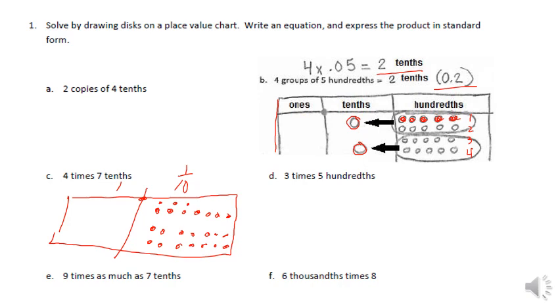Actually, that's only three groups. One, two, three, four, five, six, seven. There's four groups of seven tenths.